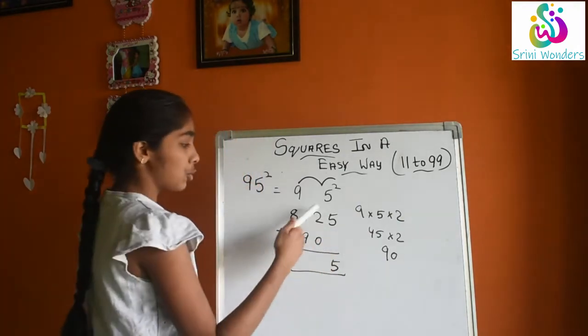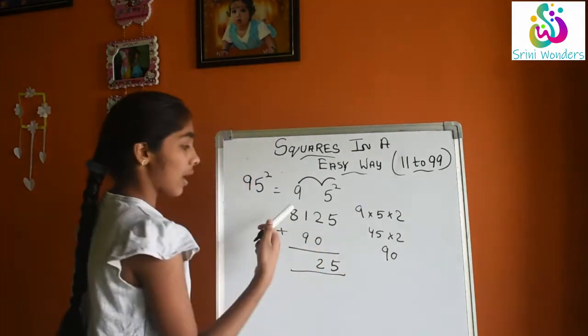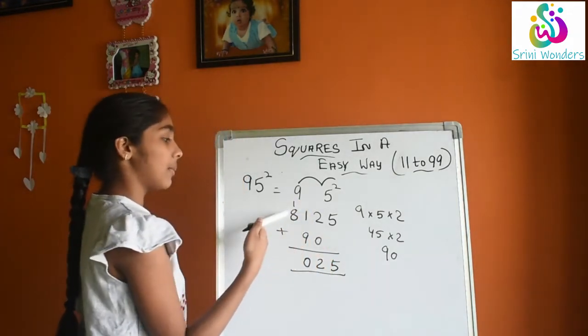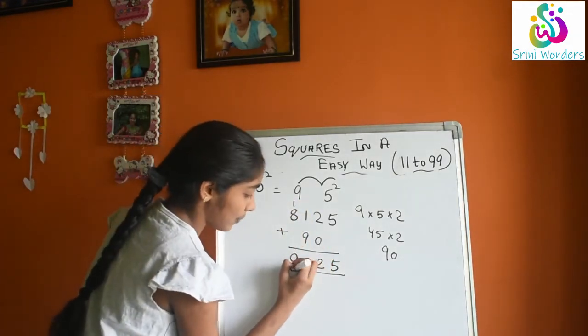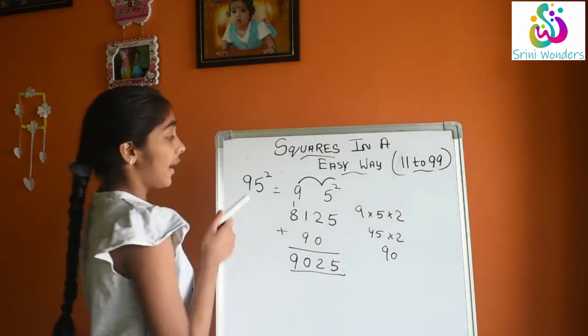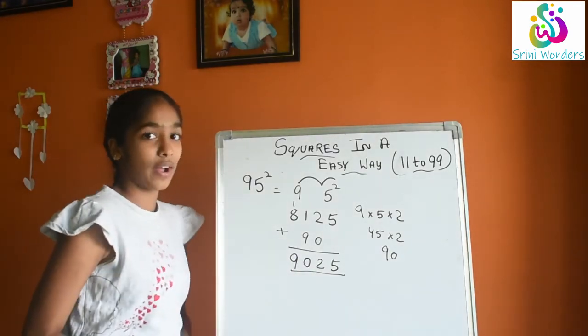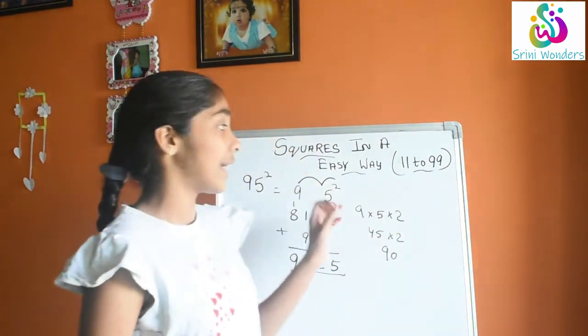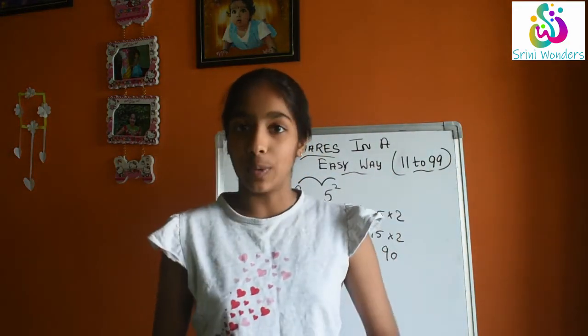Now if we will add, here we will get 5. 2 plus 0, 2. 1 plus 9, 10, 0 here, 1 here. 1 plus 8 is 9. Now 9025. 95 square is 9025. See, with this trick only you can easily solve. You can easily get the answers of 11 to 99 square.